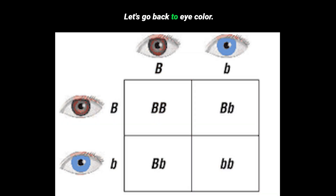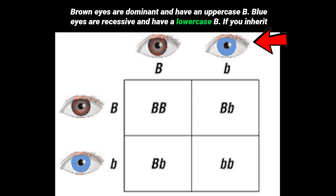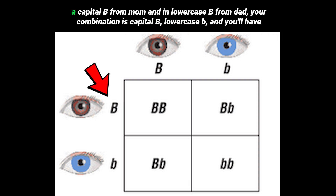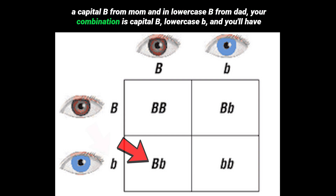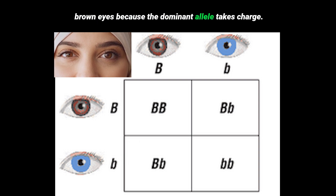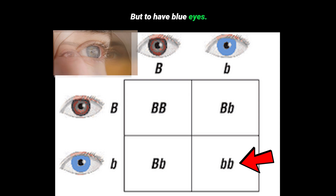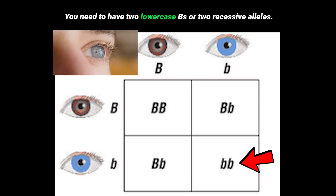Let's go back to eye color. Brown eyes are dominant and represented by an uppercase B. Blue eyes are recessive and represented by a lowercase b. If you inherit a capital B from mom and a lowercase b from dad, your combination is capital B lowercase b, and you will have brown eyes because the dominant allele takes charge. To have blue eyes, you need two lowercase b's — two recessive alleles.